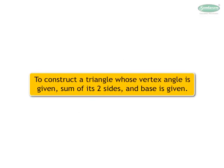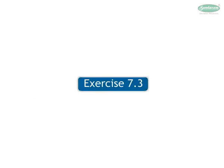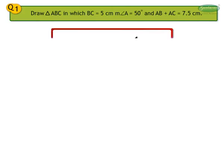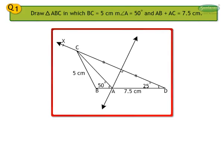Let us see how to construct a triangle whose vertex angle is given instead of base angle, some of its two sides and its base is given. Let us solve examples from exercise 7.3 to understand the steps of construction. Draw triangle ABC in which BC is equal to 5 cm, measure angle A is equal to 50 degrees, and AB plus AC is equal to 7.5 cm.